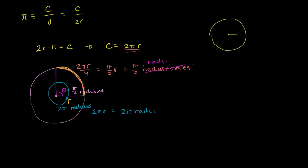You assume you have a unit circle, a circle of radius 1. Then the trig functions are defined as: for any angle theta, cosine of theta is the x-coordinate of the point along the arc that subtends this angle. And then sine of theta is the y-value of that point.